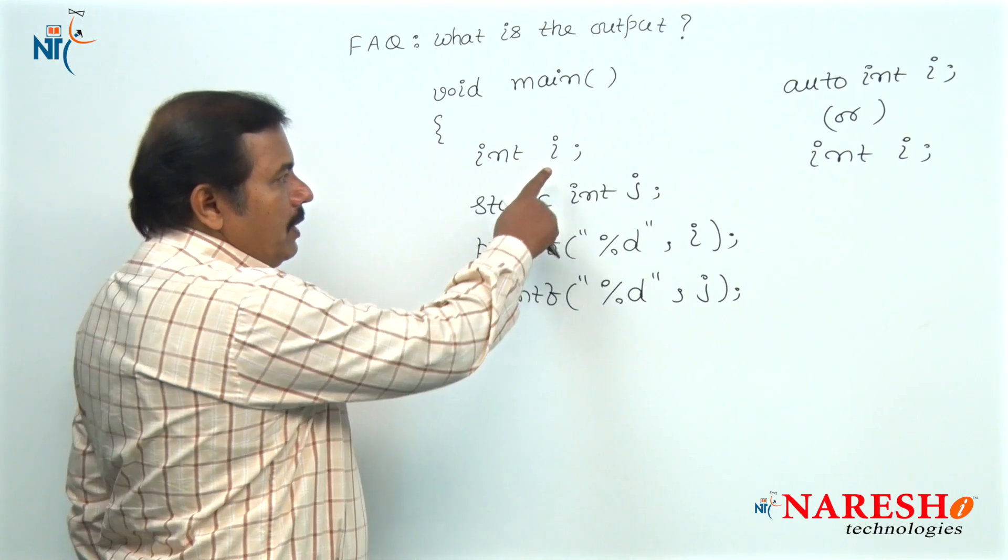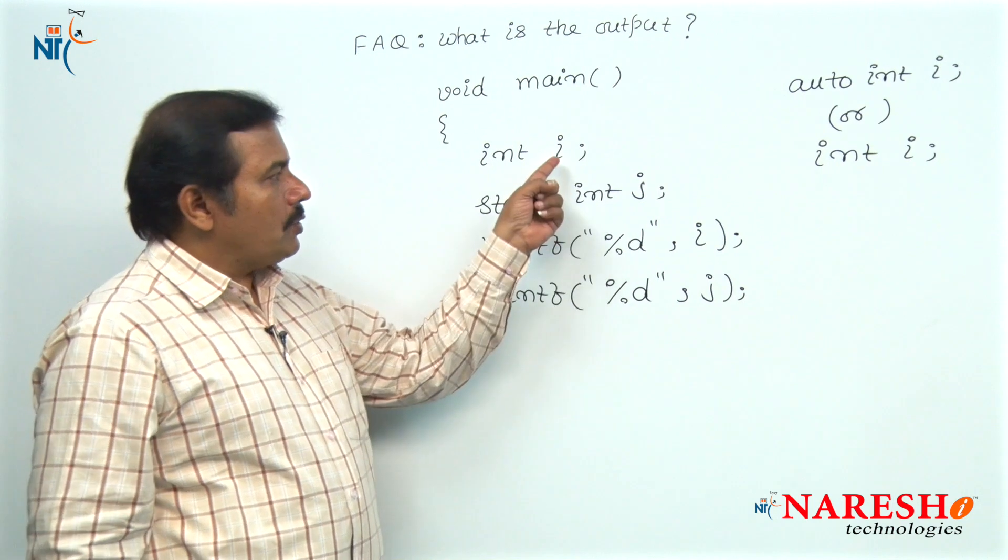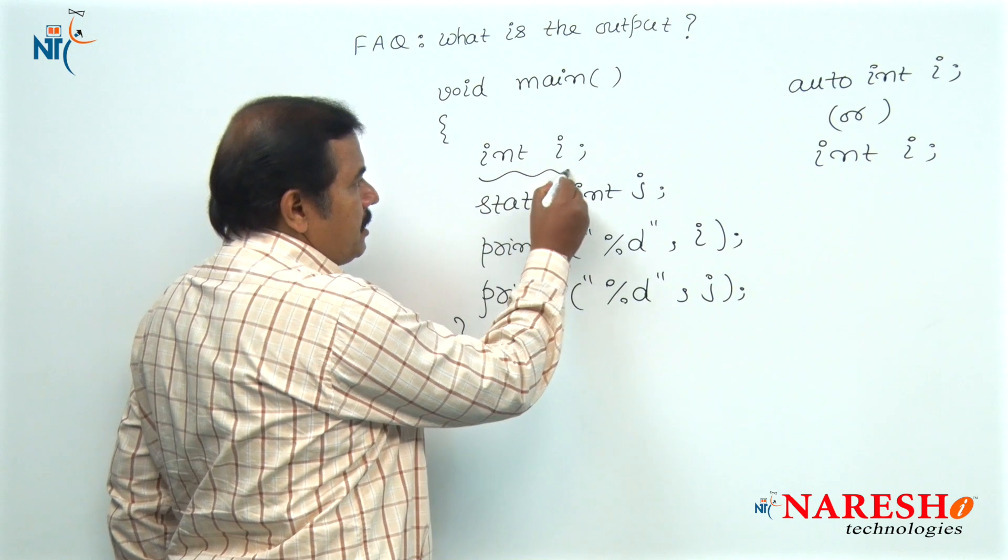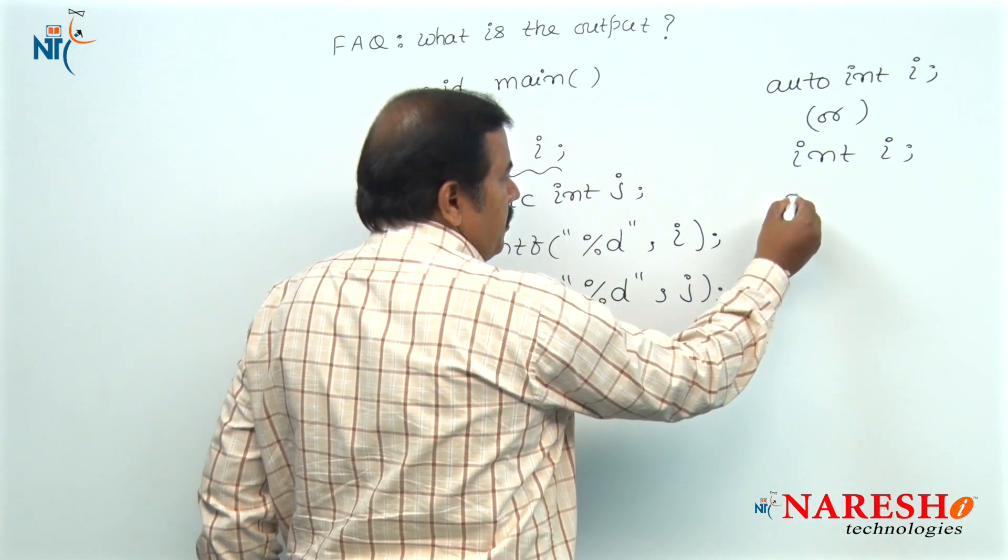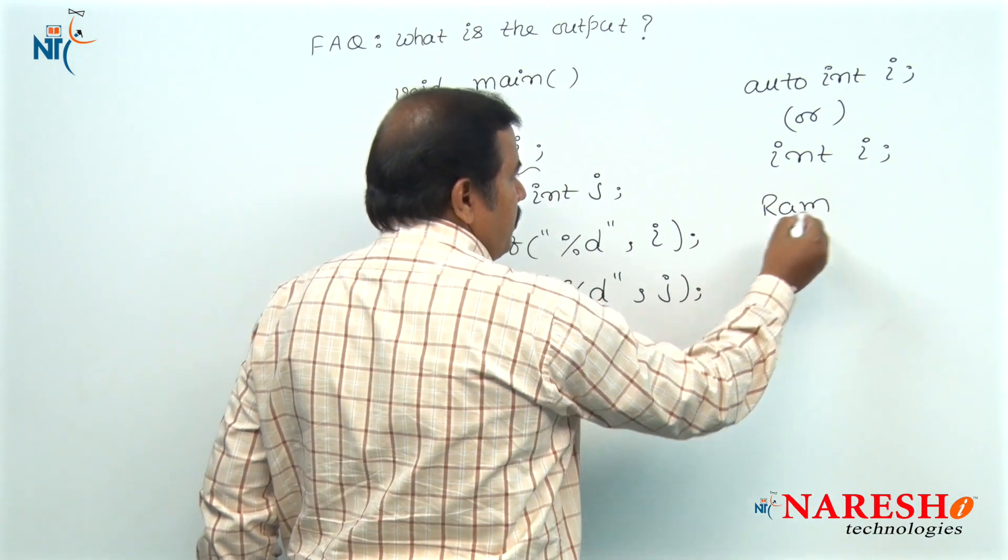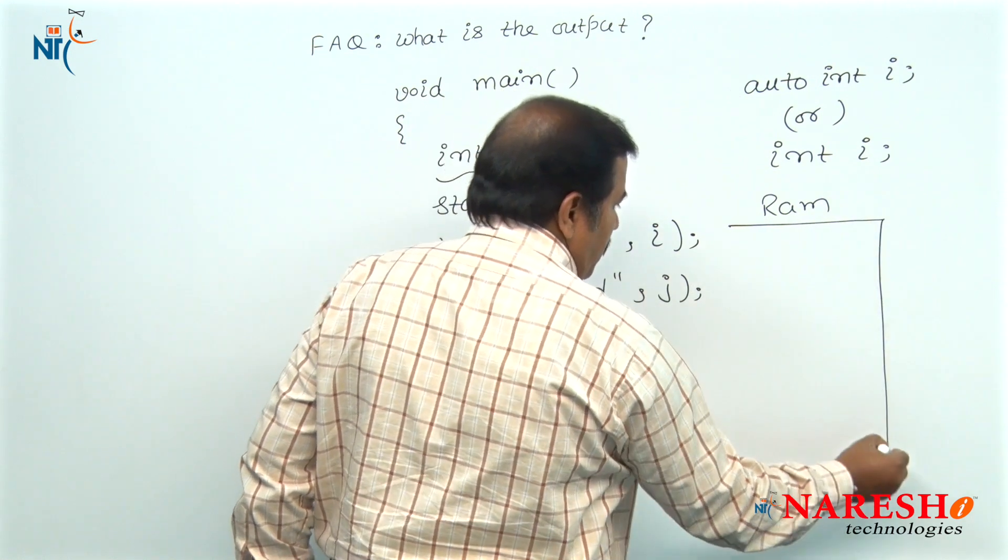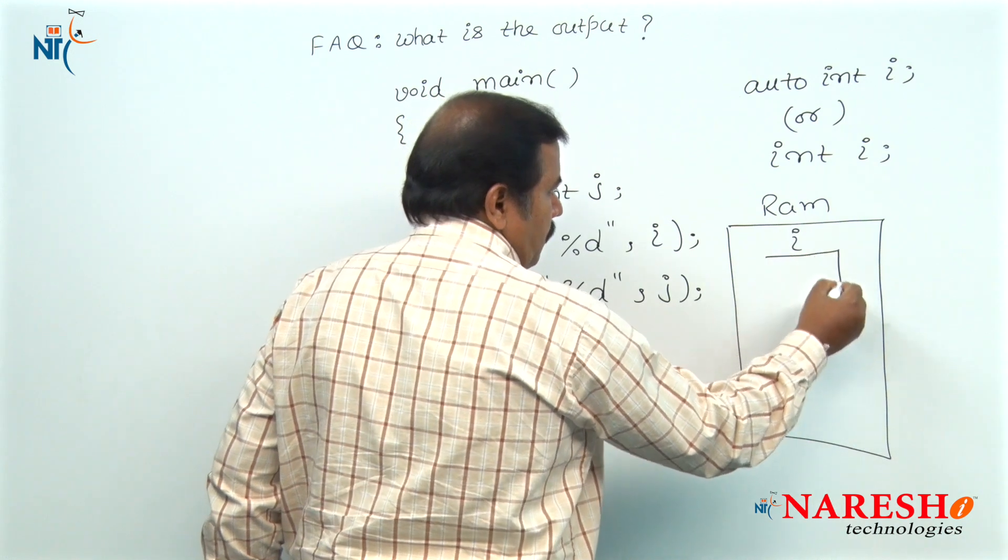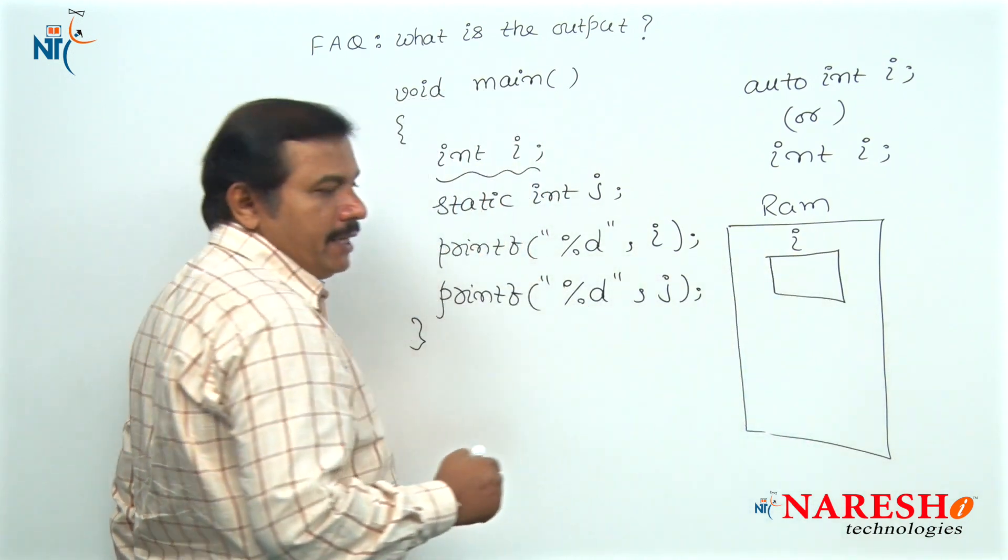Here, the default value of this automatic variable i is garbage. When the statement executes, inside the main memory in the RAM chip, 2 or 4 bytes of memory space is allocated for variable i.